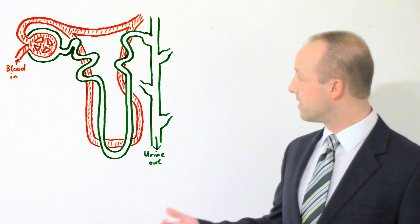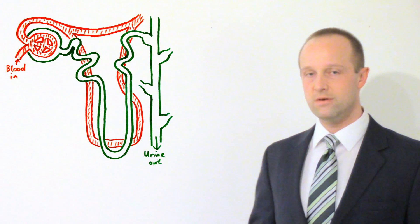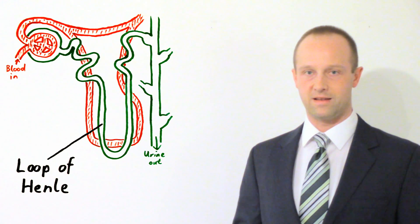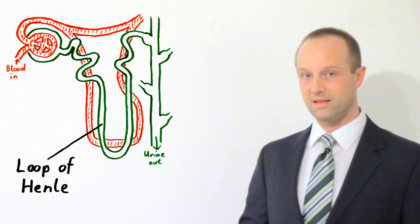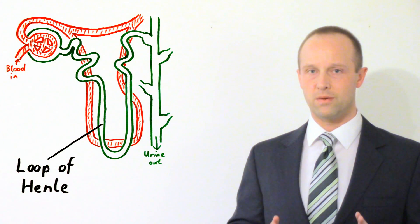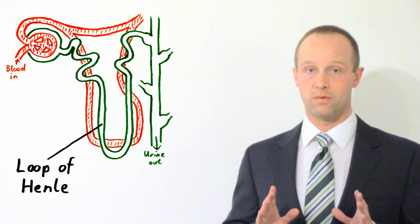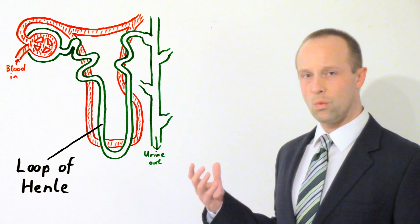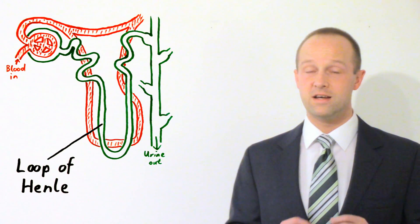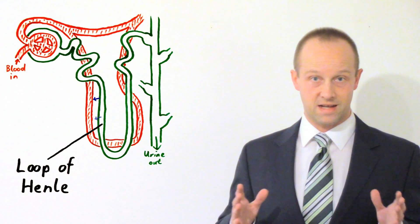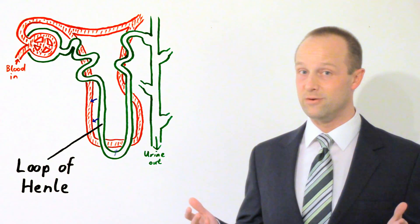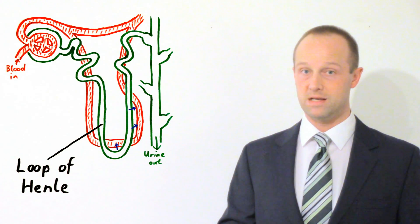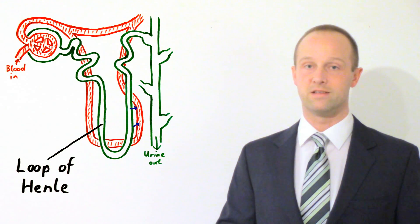And that makes its way along the tubule. And then you get to another really key part which you need to know the name of. This is the loop of Henle. Now the loop of Henle is really the important bit when it comes to the regulation of the amount of water in your body. Because what's going on in the loop of Henle is that it lets water pass out. Again another leaky tube. But the amount of water which it lets pass out can be controlled. I'll come back to that in just a moment.